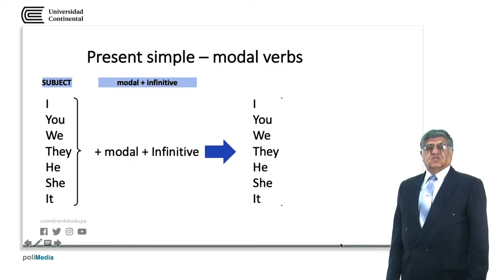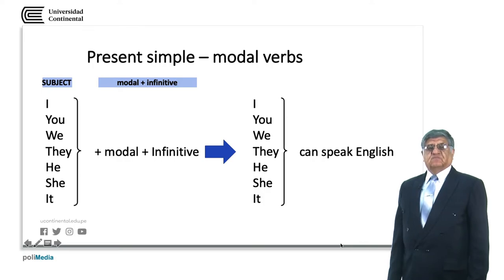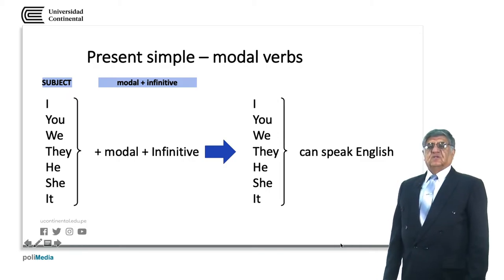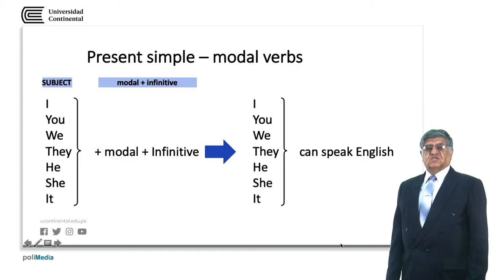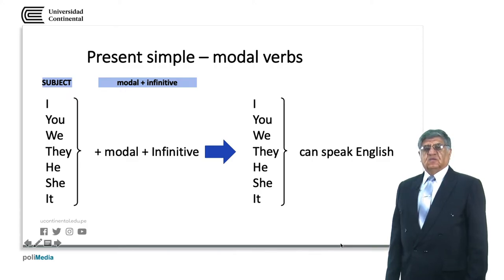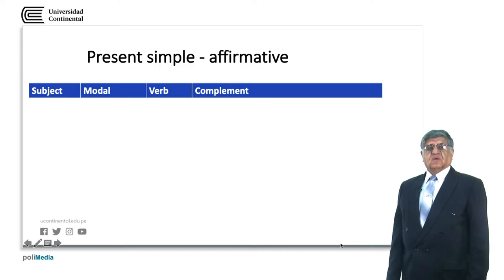With modal verbs, the structure is subject + modal + infinitive. For example: 'can speak English' — 'can' is the modal, 'speak' is the infinitive form, and 'English' is the object or complement, because English is the object of the action 'speak'. What do you speak? English.